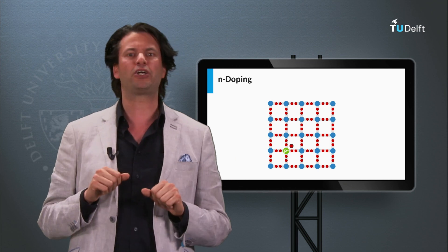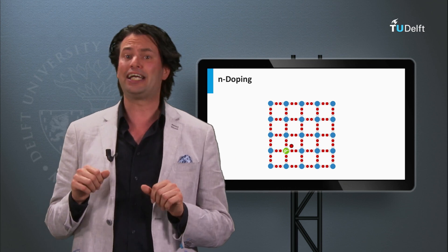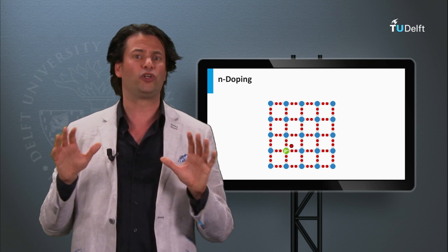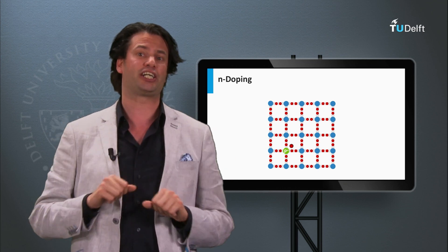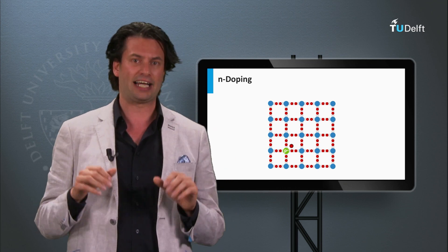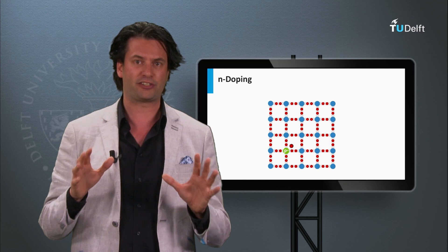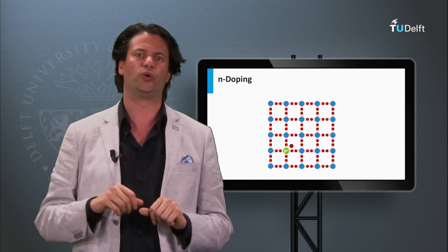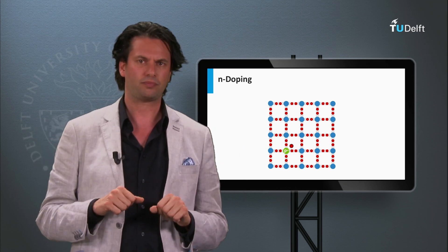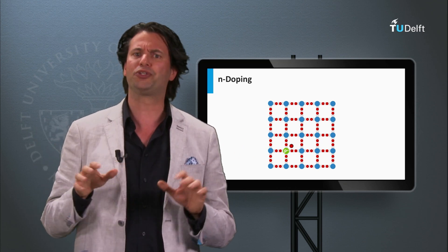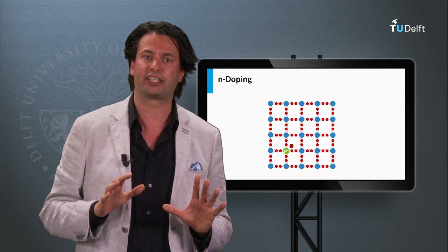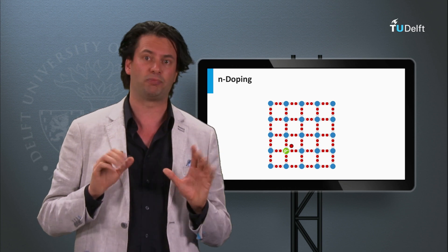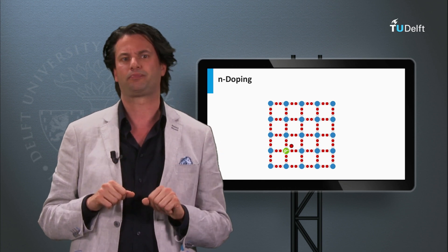For N-doped semiconductors, the electrons are called the majority charge carriers, as the density of electrons is much higher than that of holes. The holes are called the minority charge carriers in an N-doped semiconductor.